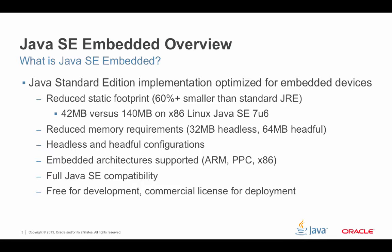When we're talking about Java SE Embedded, what is it? Java SE Embedded is really the Java Standard Edition implementation optimized for embedded devices. We're talking about a reduced static footprint somewhere around the neighborhood of 60% smaller than the standard JRE. For instance, if you're looking at an x86 Linux environment of Java SE 7U6, we're talking about 42 megabytes instead of 140 megabytes.